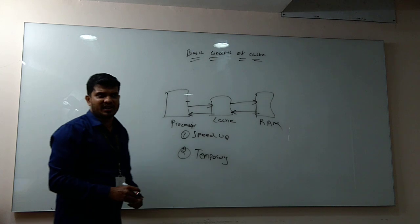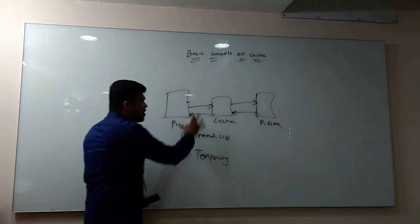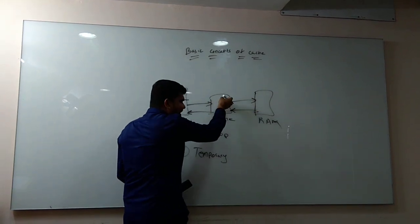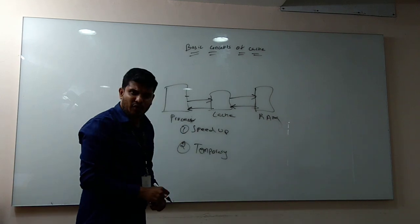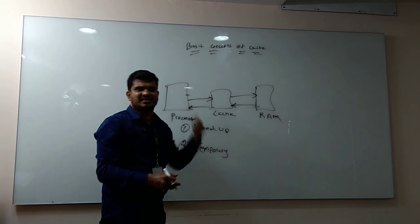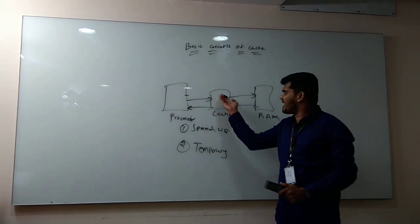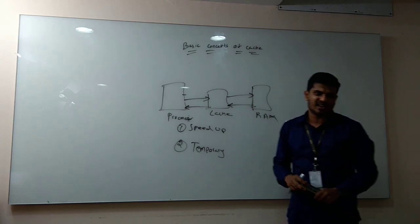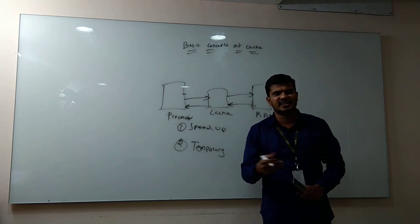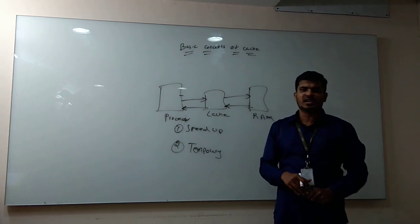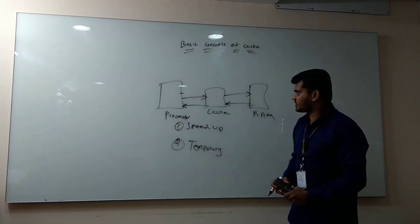It's a temporary storage device. Why we call it a temporary storage device is it can't store everything. It can keep storing data from the RAM, and once the cache is full, it has to delete the previously existing data. What data gets deleted is determined by page replacement policies — like first in first out, last in first out, least recently used, and least frequently used. These are some of the deletion policies we apply on the cache.